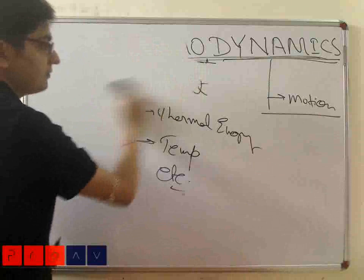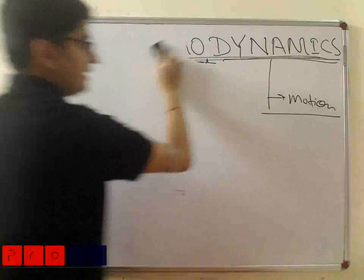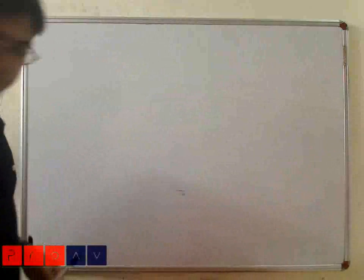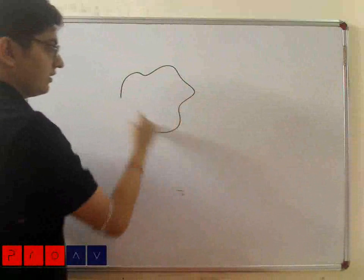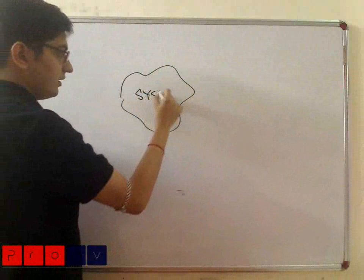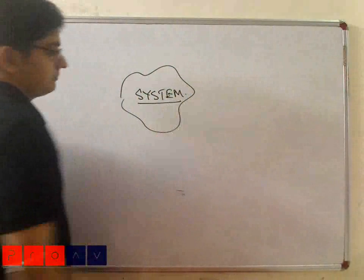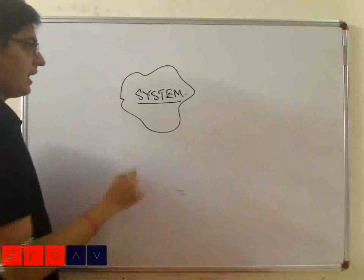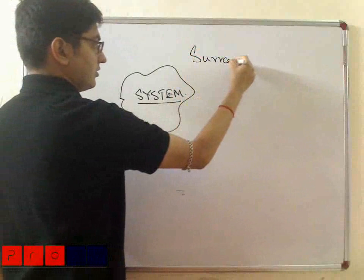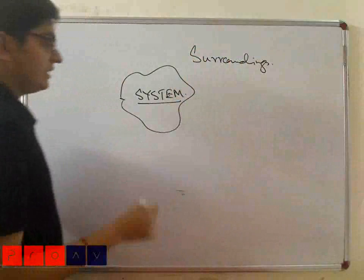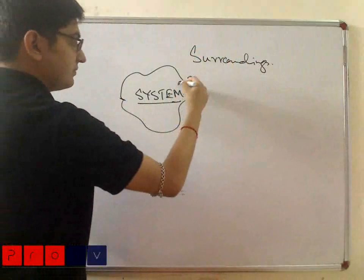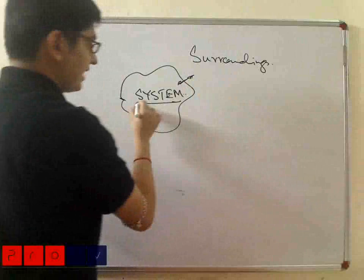For any thermodynamic analysis, we define any mechanical or heat transfer equipment — like a turbine, exchanger, or pump — as a closed domain. This domain is known as the system. Outside this domain is known as surroundings. It is the boundary which tells the relation between surroundings and the system.